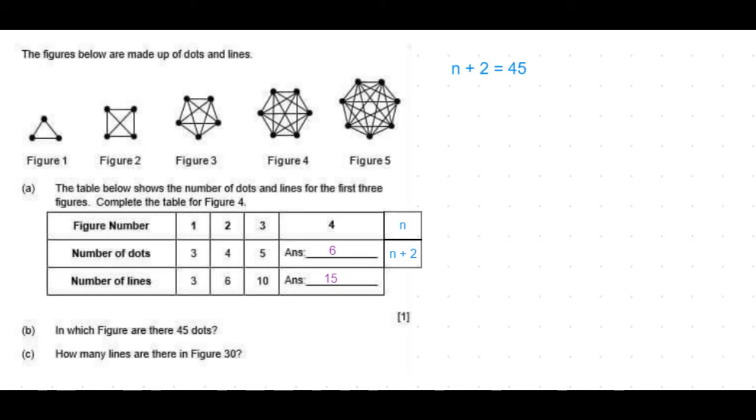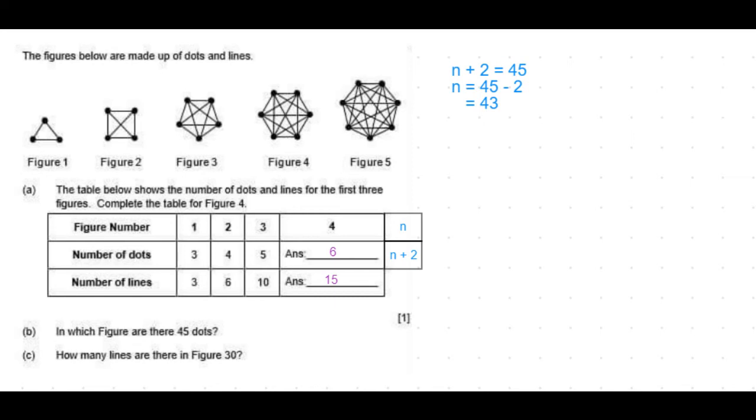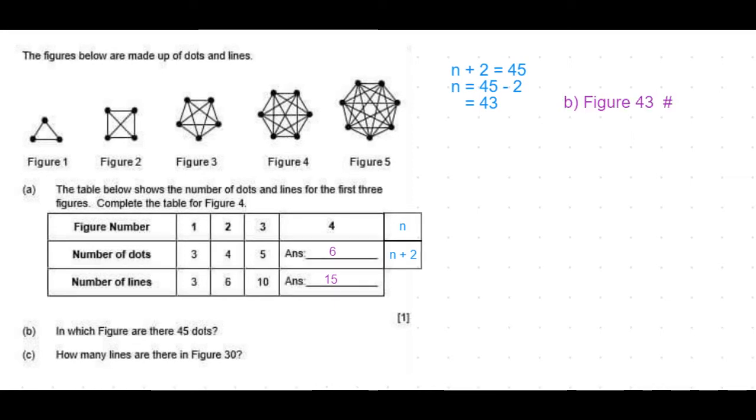For 45 dots, n plus 2 equals 45. So the figure number is 43. The answer is figure 43 will have 45 dots.